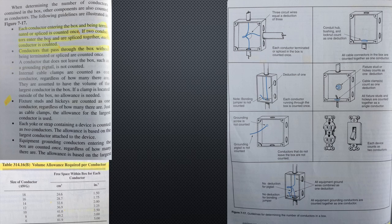Fixture studs and hickeys are counted as one conductor, regardless of how many there are. Just as cable clamps, the allowance for the largest conductor is used.